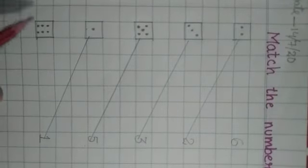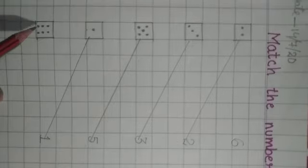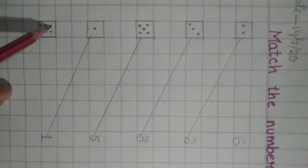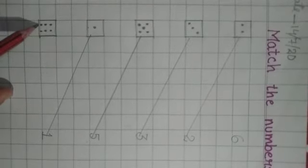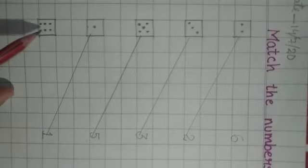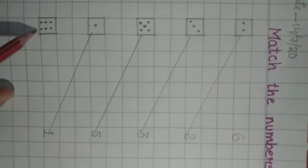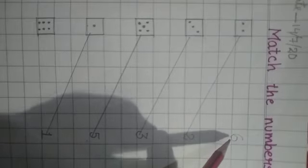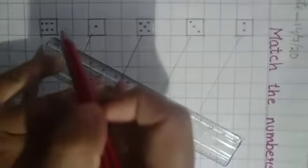Now come to the last box. We will count it. How many dots are here? 1, 2, 3, 4, 5, 6. 6 dots. And the last number is 6. So we will match this box with number 6.